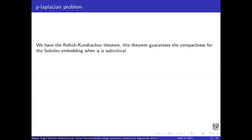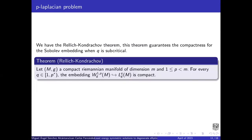We have the Rellich-Kondrachov theorem. And this theorem guarantees the compactness for the Sobolev embedding when Q is subcritical. Let (M,g) be a compact Riemannian manifold of dimension m and p bigger or equal than 1 and less than m. For every Q in this interval, this embedding is compact.